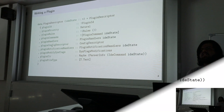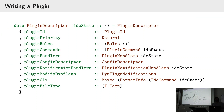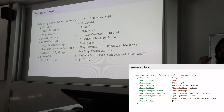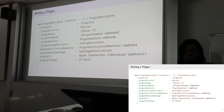So what does a plugin look like? To write a plugin you have to fill in this data structure, which looks kind of big but it's actually really simple. You start with an empty plugin and fill in a few fields. You have to fill in the ID, which is just a descriptive name string for your plugin. You have a priority, which is just a number that controls the order in which plugins are executed.